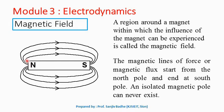The magnetic lines of force or magnetic flux originate from the north pole and end at the south pole. So a magnet will always have a north pole and south pole both. Isolated magnetic pole can never exist — just remember this statement: isolated magnetic pole can never exist. One of Maxwell's equations will give a theoretical justification for this.